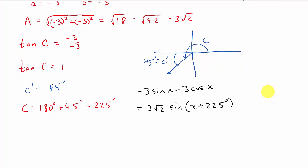Now, look. We could also do this as pi over four radians. 45 degrees is equal to pi over four radians. And so, we would get c is equal to pi plus pi over four. And so, that's going to be five pi over four. And so, we could also write this as three square roots of two times sine of x plus five pi over four.